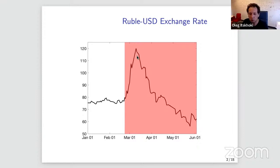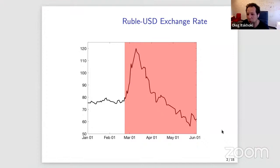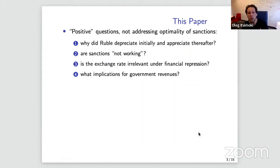There was a steep depreciation, then surprisingly about a month into the war the ruble started appreciating. At first it looked like the central bank simply stabilized the ruble, but then it became apparent it was a prominent trend of strengthening. It first seemed the central bank wanted to return to the pre-war level of 75, but the ruble appreciated to around 55 — at record highs in the last couple of weeks.